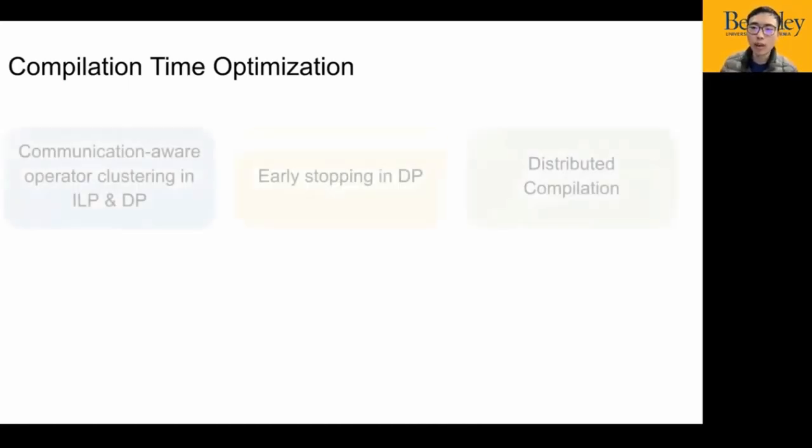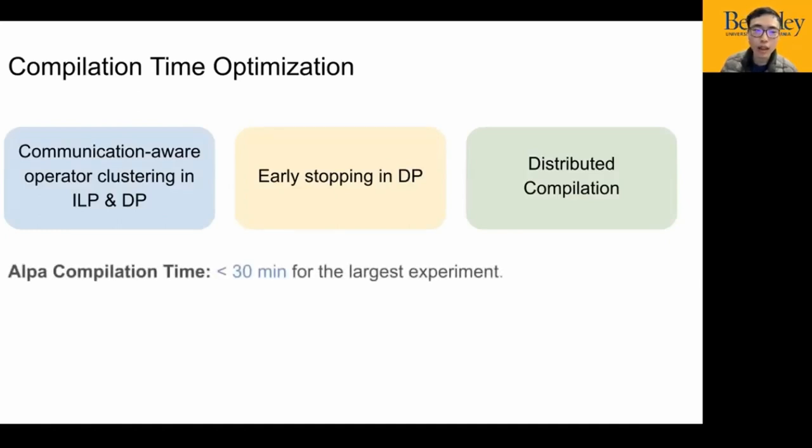Naively, applying previous passes will take a very long time for compilation. In ALPA, we also include several optimizations to reduce the compilation time. We apply communication-aware operator clustering in ILP and DP to reduce the number of operators, so we can simplify the graph. And we also perform early stopping in the DP when it cannot produce better results. And finally, we distribute the compilation of different parts on the cluster so we can further reduce the compilation time. As a result, we can reduce the compilation time to less than 30 minutes for our largest experiments.